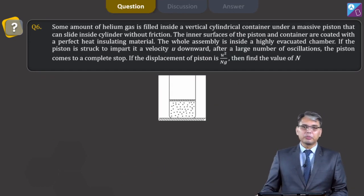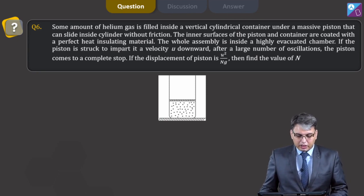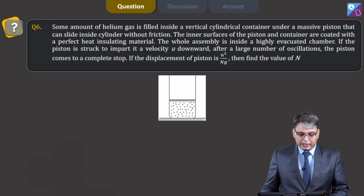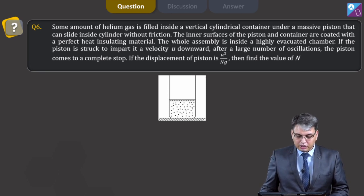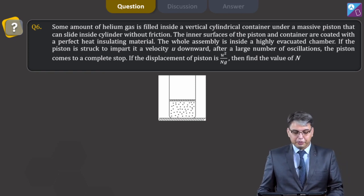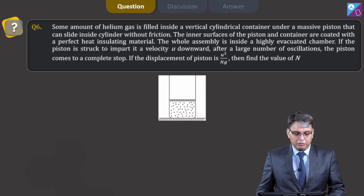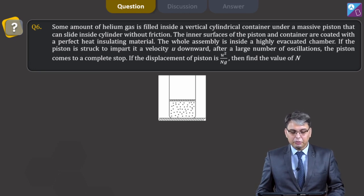Moving on to question number 6. Some amount of helium gas is filled inside a vertical cylindrical container under a massive piston that can slide without friction. The inner surface of the piston and container are coated with perfect heat-insulating material. The whole assembly is inside a highly evacuated chamber. If the piston is struck to impart a velocity u downwards, after a large number of oscillations the piston comes to a complete stop. If the displacement of the piston is u²/(Ng), find the value of N.